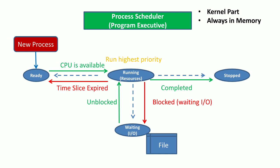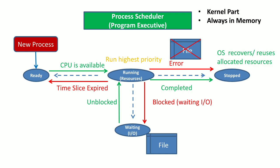The third scenario is that the process has completed its entire execution, so it transitions to the stopped phase. A fourth scenario is that the process may also transition to the stopped phase if an error has occurred in such a manner that the process scheduler cannot recover it. For example, a process requires input from a file but this file is not available, so the process scheduler transitions this running process into the stopped phase. Inside the stopped phase, the operating system or process scheduler recovers all the resources which were allocated to this stopped process, and these resources are reallocated or reused for other processes.